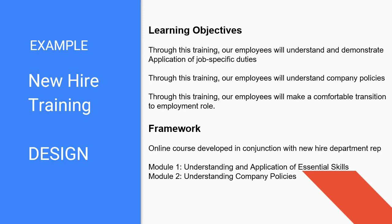Once we've completed the analysis phase, we move on to the D for design, phase two. The first thing we want to do is take the information from the analyze step and create our learning objectives — we need to establish what we want our learners to achieve. With these learning objectives, we can start making some sketches of what type of content could be used, thereby creating a framework or structure for our course, as well as identifying who would be involved in the development.